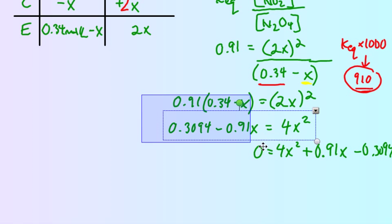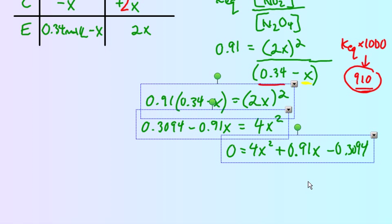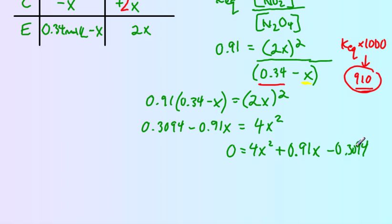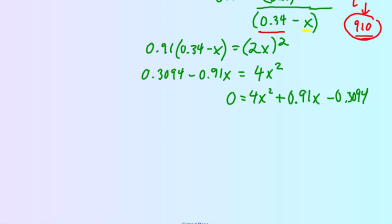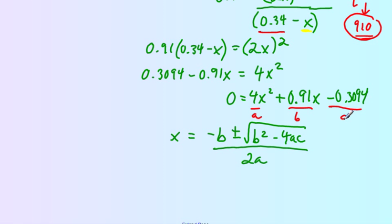If we collect our terms all on one side, we get 4x squared plus 0.91x minus 0.3094. At this point we can solve for x using the quadratic equation. Hopefully that's something you recall fondly.